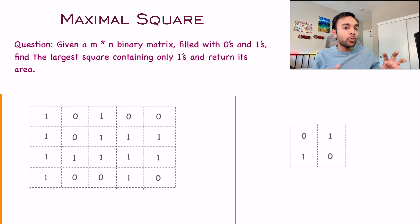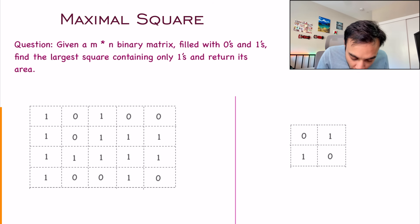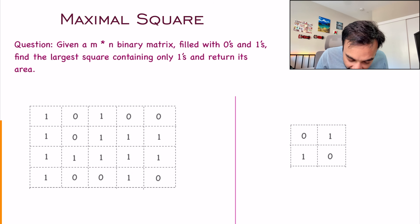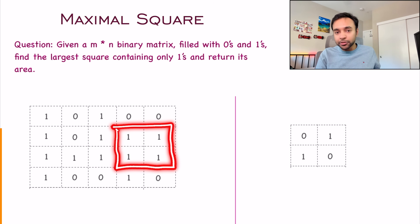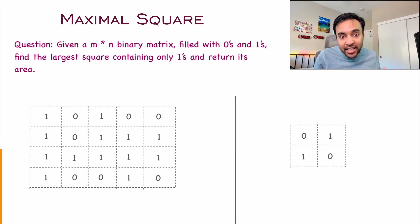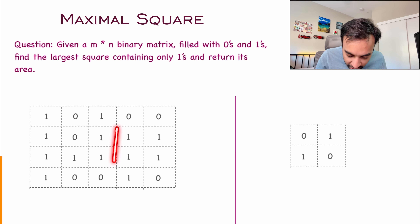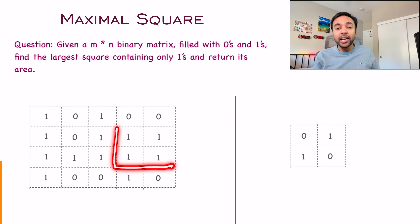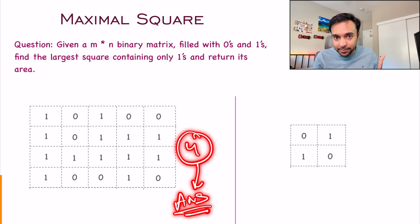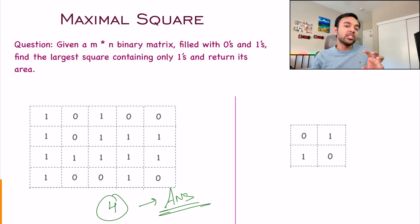You have to find a square that only has ones and return its area. I can find one particular big square that has only ones, and one more square that also has only ones. There is no other bigger square than these that only has ones. The area is simply the side length squared, so the area will be four. Hence you return four as your answer. Note that even a single one is a square itself.